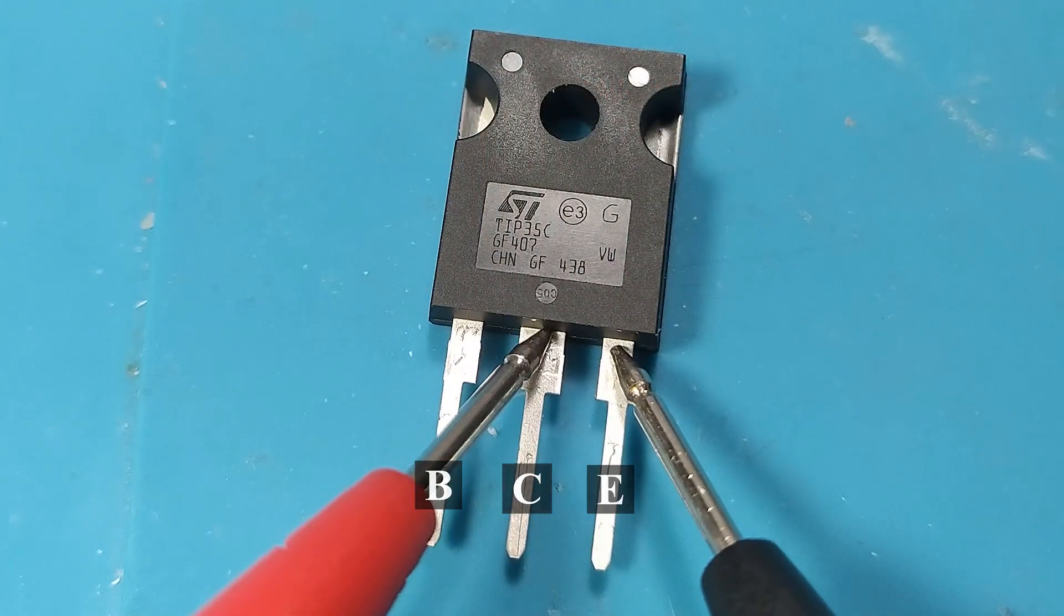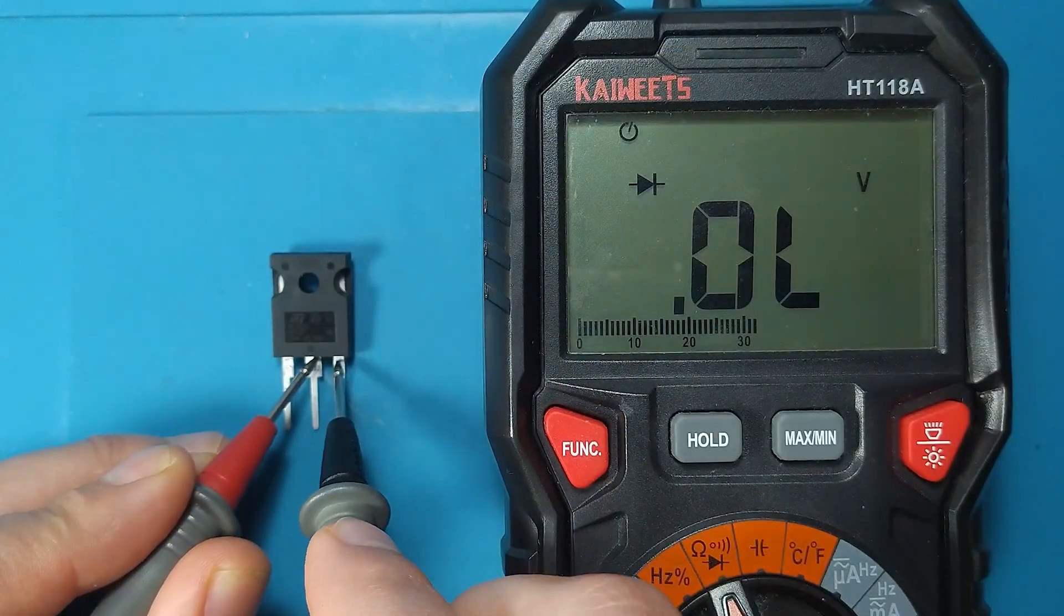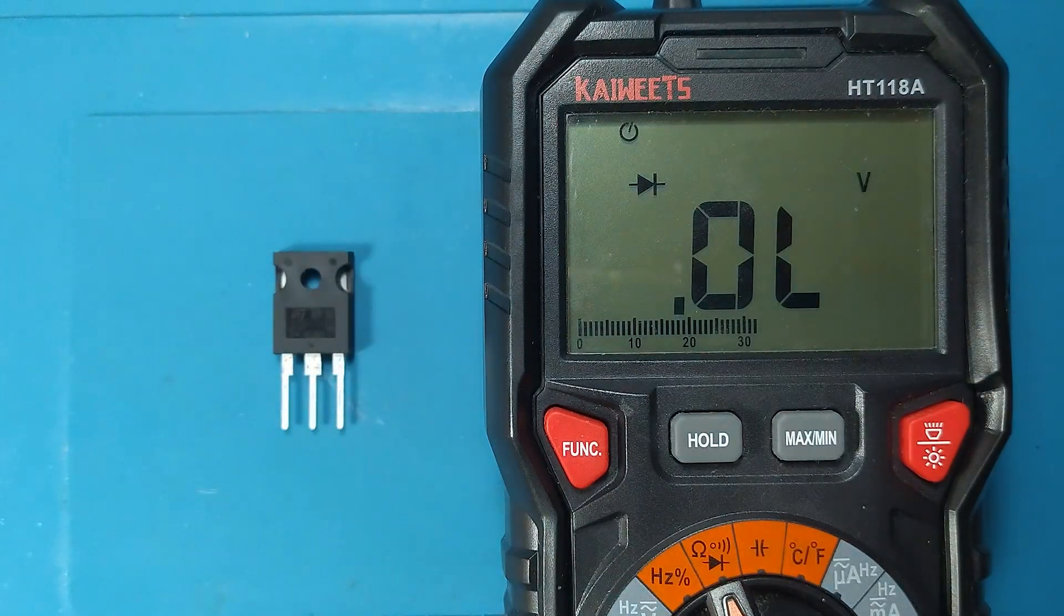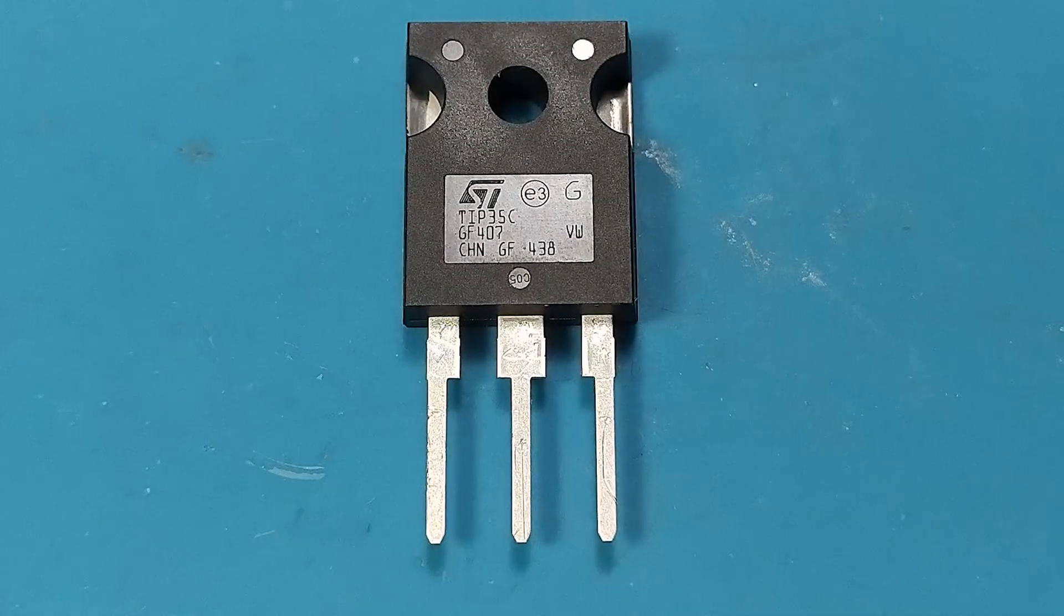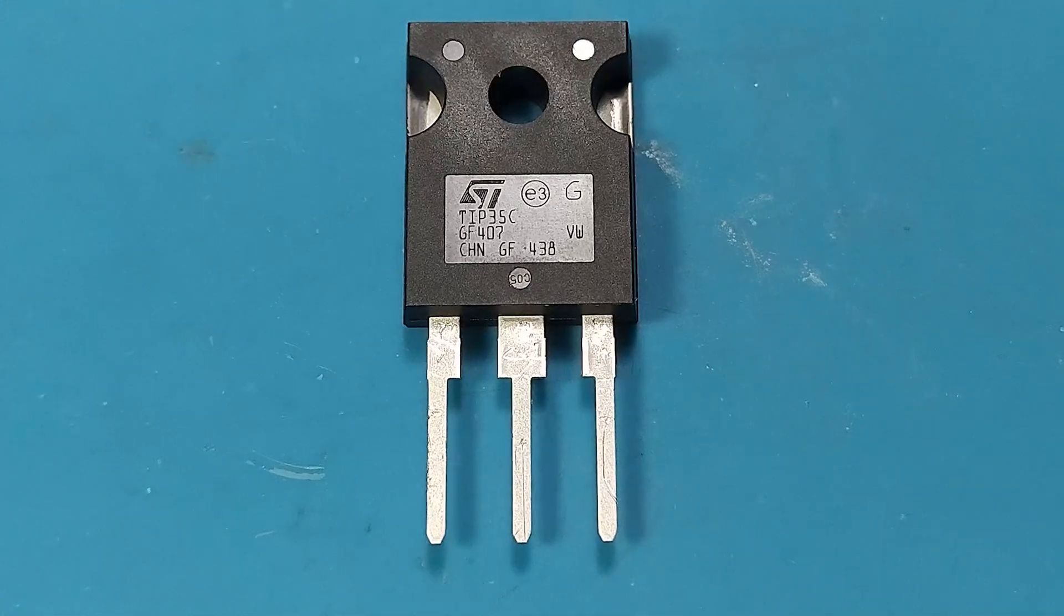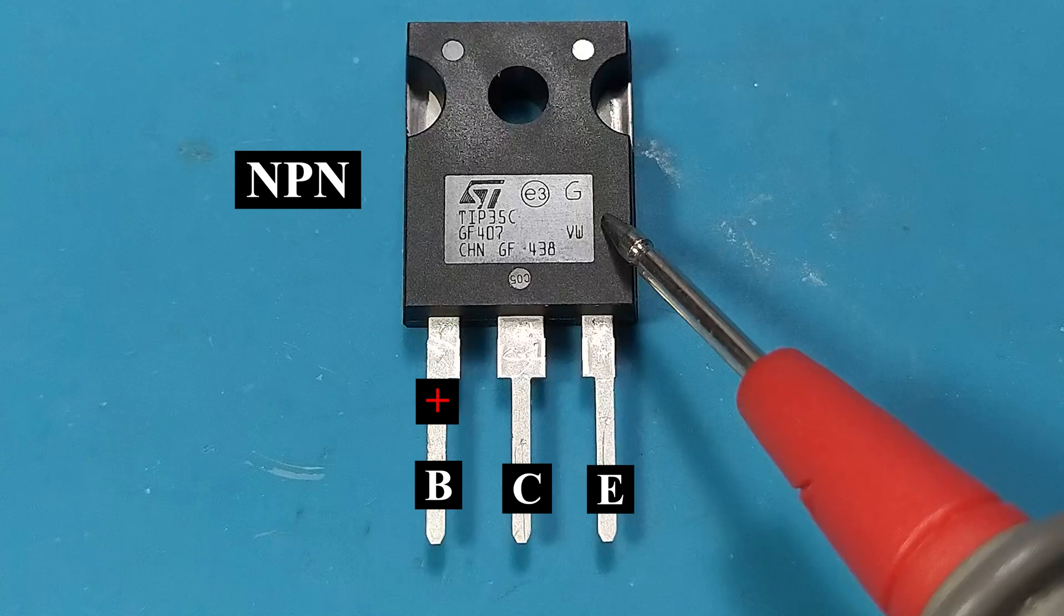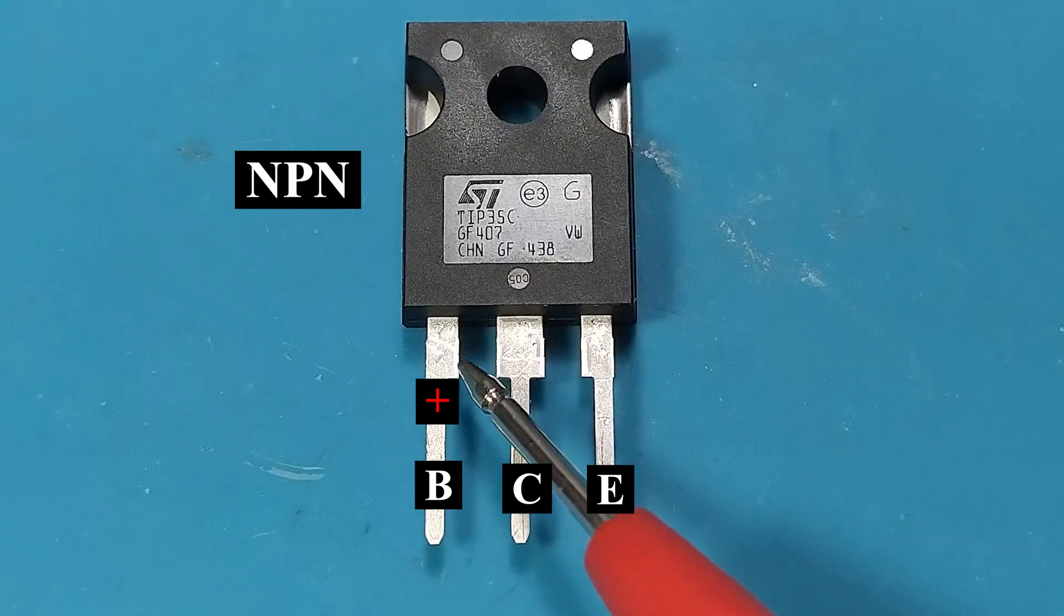Measuring between emitter and collector, we should have no voltage drop regardless of polarity. From these measurements we deduce that the TIP35 transistor is of the NPN type, plus on the base.